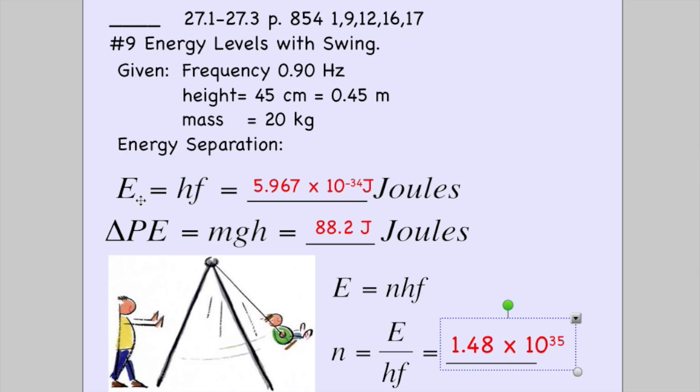First thing we do is just use that equation of Planck's energy equals HF. Planck's constant times that frequency of 0.9, and you get a really tiny step.